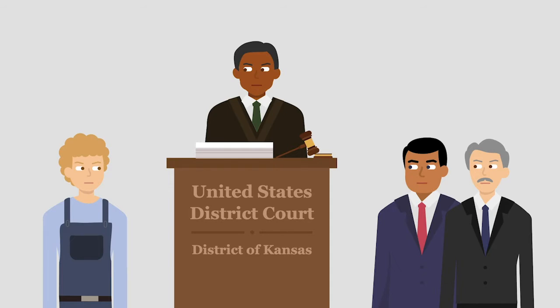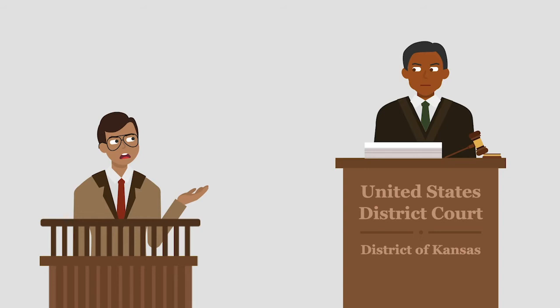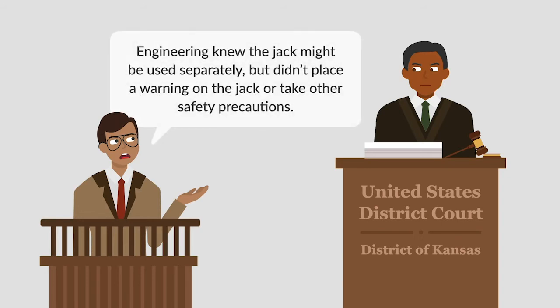Combustion was immune from suit under Kansas' workers' compensation law. During discovery, Hardin deposed Engineering employee Malcolm Fell. Fell testified that Engineering knew that the jack might be used separately from the crane, but didn't place a warning on the jack or take other safety precautions.